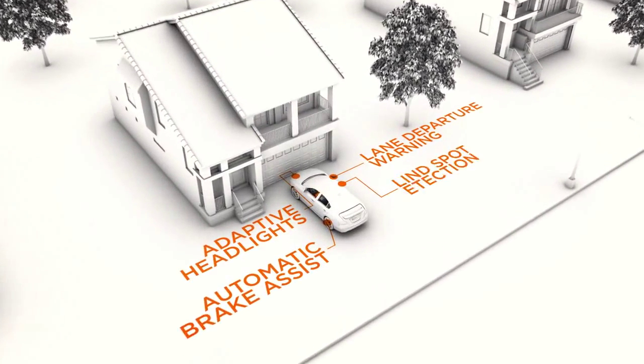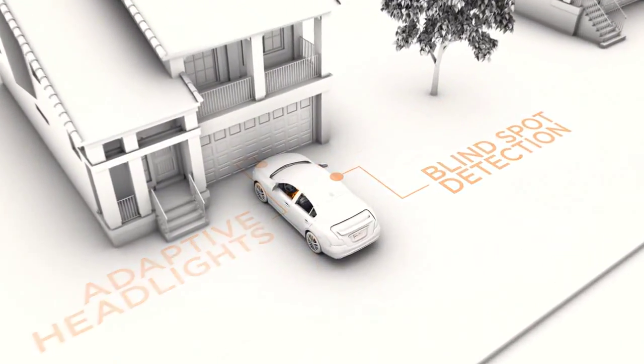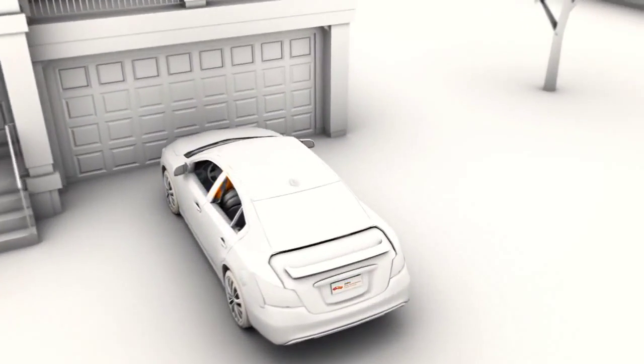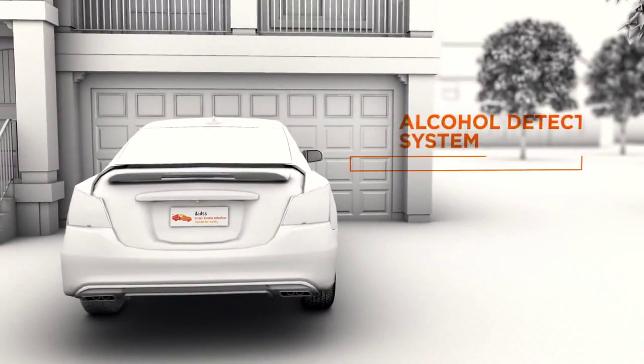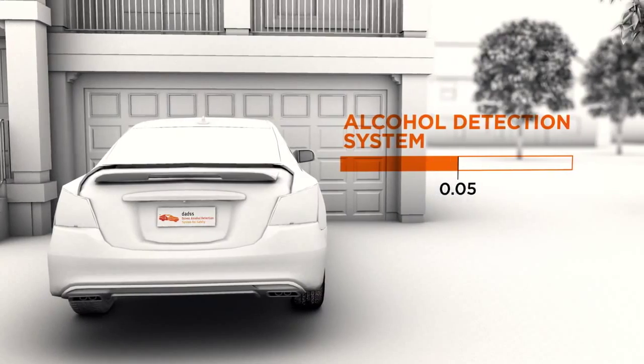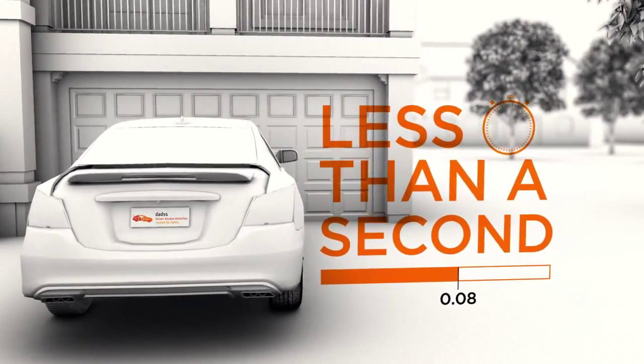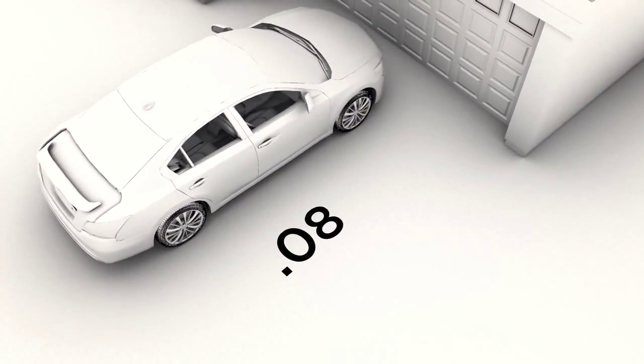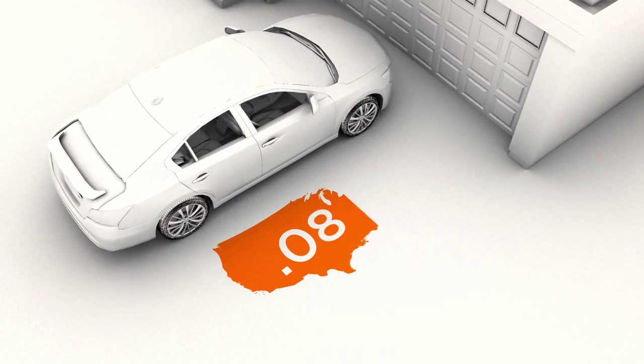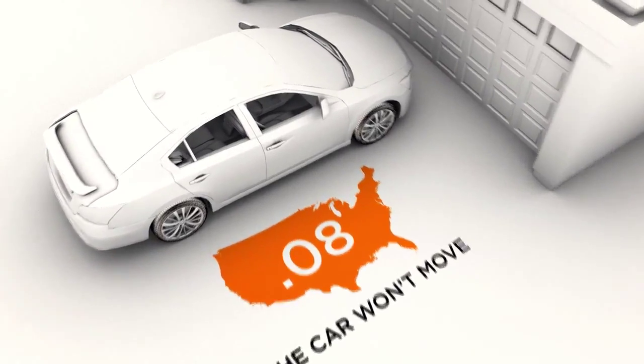Our cars are getting smarter, and now a new safety feature is being developed to protect against drunk driving. The alcohol detection system will measure the alcohol in a driver's blood in less than a second. If it is above .08, the legal limit in all 50 states, the vehicle won't move.